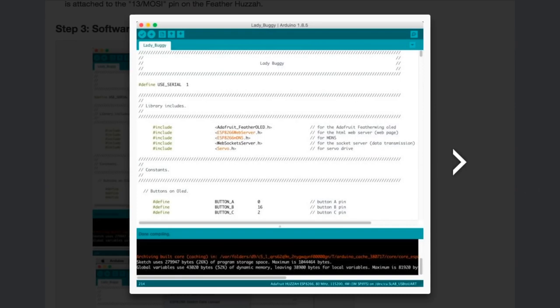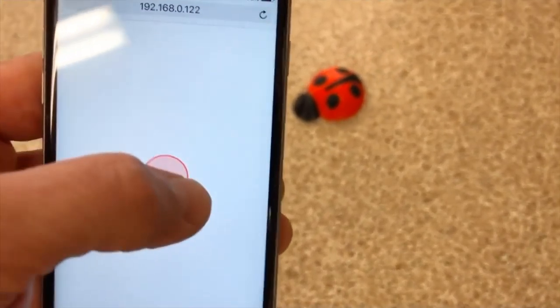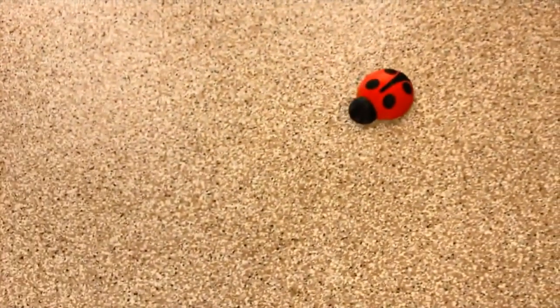For the control, Greg's code uses the ESP8266 webserver library to turn the board into its own little access point. You connect to it with your phone like a WiFi network and then enter a URL, and you have your own little touchscreen control.